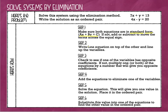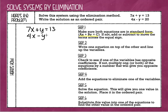Step two is we're going to write one equation on top of the other one and we're going to line up the variables — I always tell my students we're going to stack them. So we've got 7x plus y equals 13 and then we have 4x minus y equals 20. We can see that our equations are stacked: I've got my x's, I've got my y's, I've got my equals, I've got my constants.